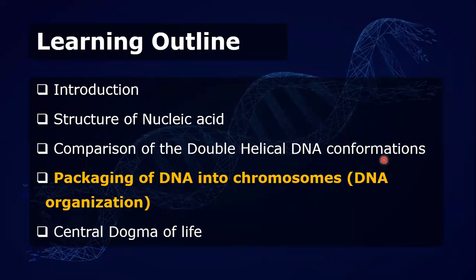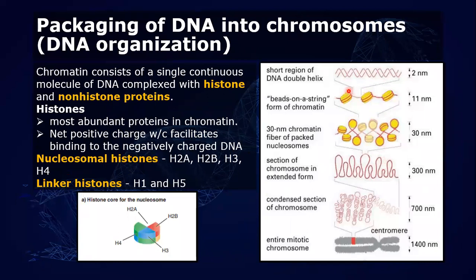To further understand DNA organization: at the very basic level, DNA is wrapped around proteins known as histones, and this formation is what we call the nucleosome. DNA is negatively charged because it has a phosphate group, and the histone core is positively charged, so the DNA wraps tightly around this histone core. This nucleosome is linked to the next one with the help of a linker DNA — this is what we call the beads-on-string structure.